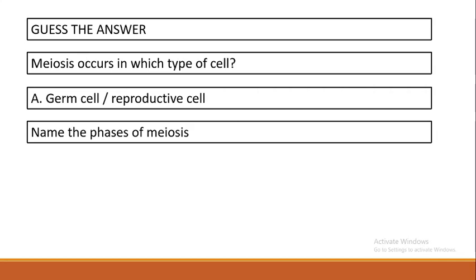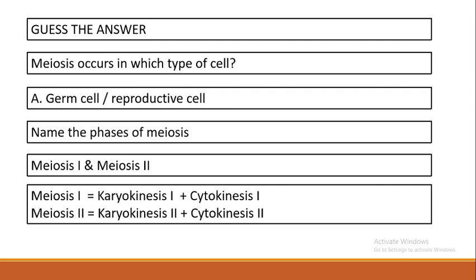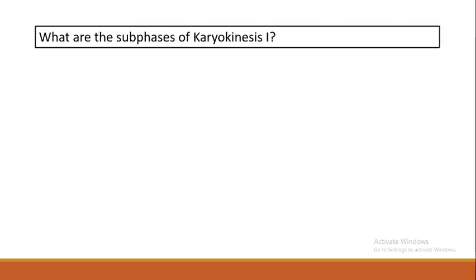Next question: name the phases of meiosis. We have two phases — meiosis one and meiosis two. Meiosis one is divided into karyokinesis one and cytokinesis one. Meiosis two is divided into karyokinesis two and cytokinesis two. Karyokinesis means nuclear division — 'karyo' means nucleus, 'kinesis' means division. Cytokinesis means cytoplasmic division. This topic was covered in 11th standard, so if you need a refresher please revisit the cell division chapter.